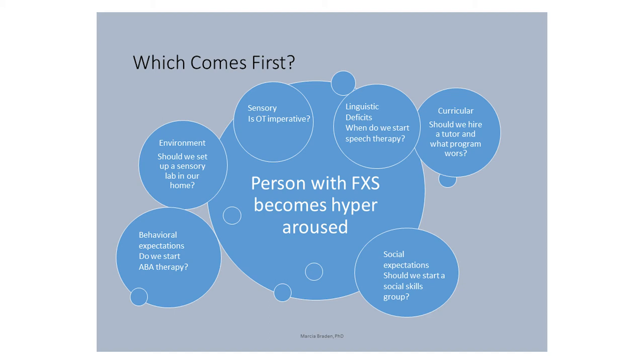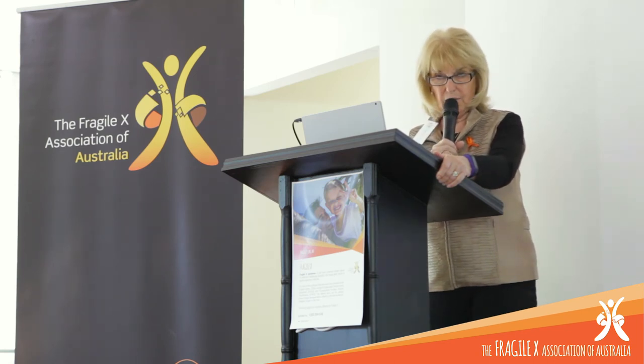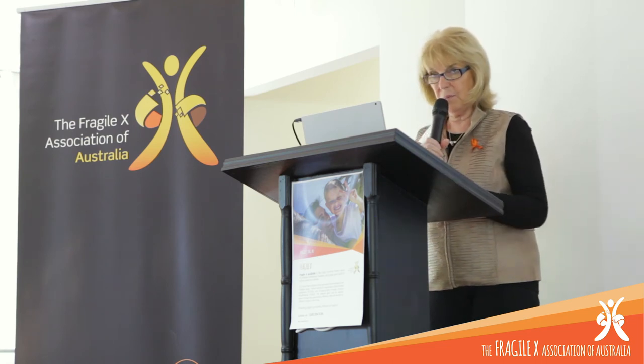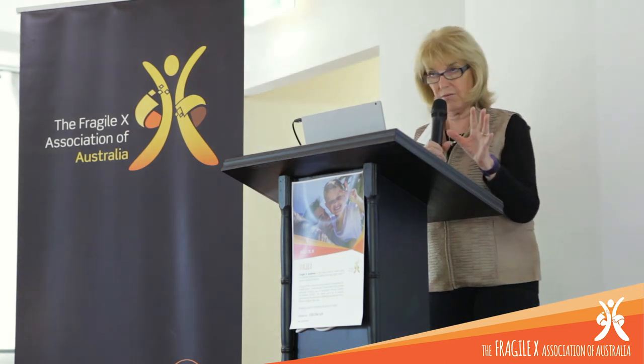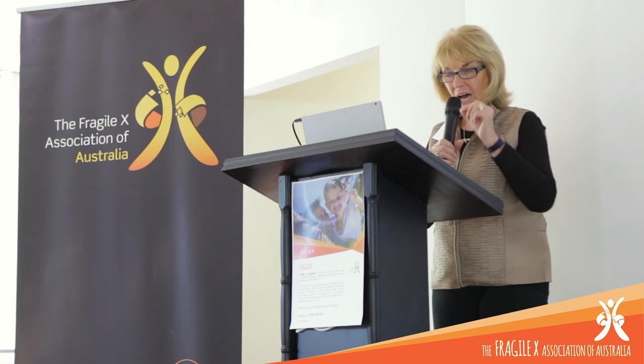Parents often ask what to do first — speech, OT, or what? Most would say for a newly diagnosed child, look first at speech and language so that behavior doesn't become the vehicle by which they communicate. But look at your child and ask what's hanging them up the most. If it's behavior — because that usually comes out first — I want to see the function of that behavior. He's not being bad to be bad. Figure out the trigger and whether it's because he can't communicate what he needs. Then put in more communication rather than getting angry at him for hitting.